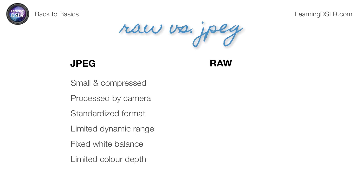White balance, which I talked about in episode four of Learning DSLR Back to Basics, is something that is kind of baked into a JPEG. Once you choose a daylight white balance — or one is chosen during auto white balance — that's baked into the file. You can make small adjustments, but you can't make radical adjustments in quite the same way as you can with RAW. JPEGs also don't have as much color range; they have millions of colors, but that's still not as much as RAW.